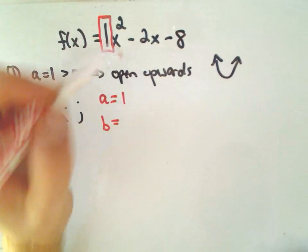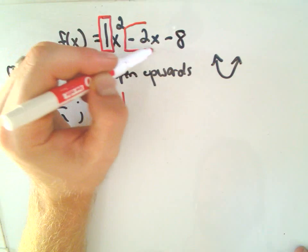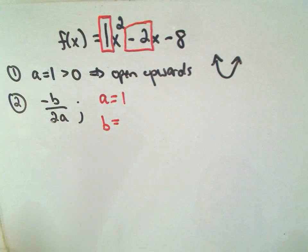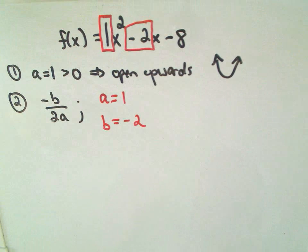The b value is whatever number is in front of x. Make sure you take into consideration the sign. So our b value, in this case, is negative 2.